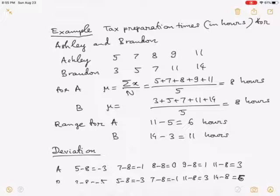With not a lot of variability in the length of time it takes to prepare a return, the chief accountant kept careful track of the amount of time in hours for all the tax returns prepared by Ashley and Brandon during the last week of March. Ashley prepared returns for 5 hours, 7 hours, 8 hours, 9 hours and 11 hours.